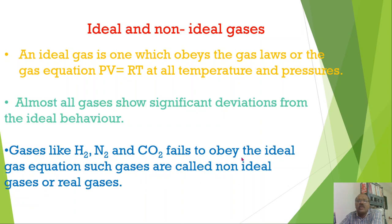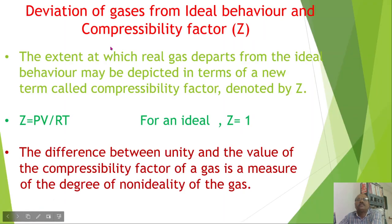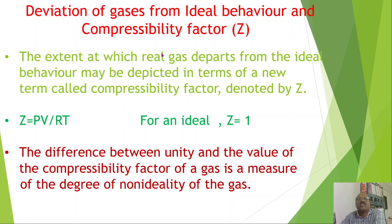Real gases show deviation from ideal behavior. Now the question is: how do we measure the deviation of gases from ideal behavior? This is studied using the compressibility factor Z. The compressibility factor Z explains the deviation of real gases from ideal behavior.